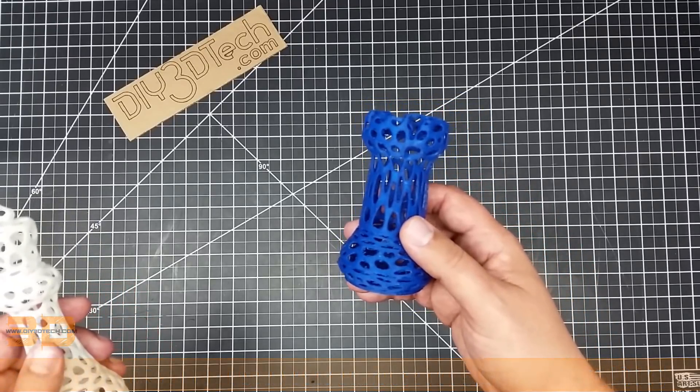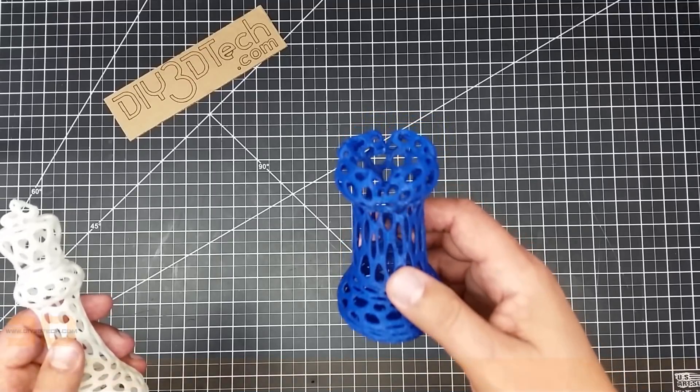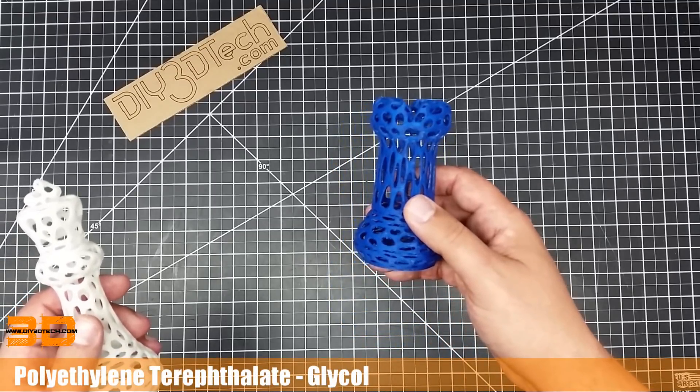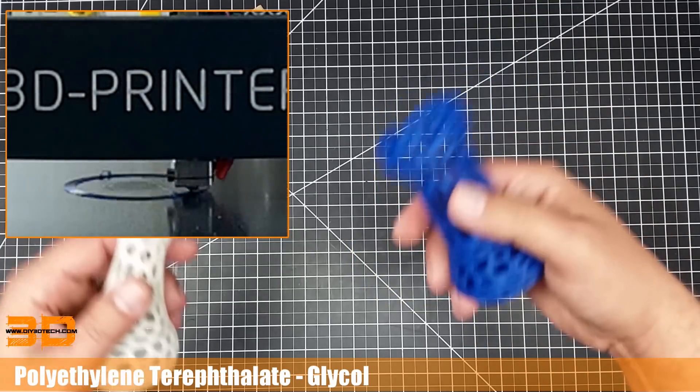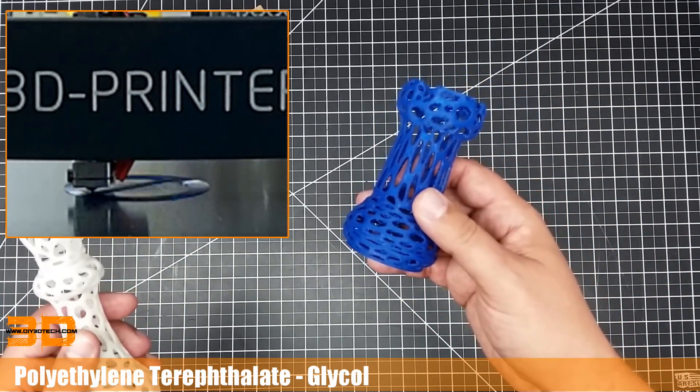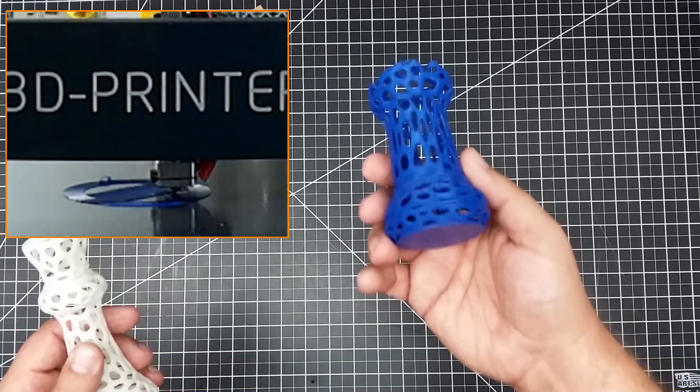In short, PETG is polyethylene terephthalate. Yeah, I'll get that right. Terephthalate, I believe I got that correct. I'll have it down below. So the piece is basically this is polyester.